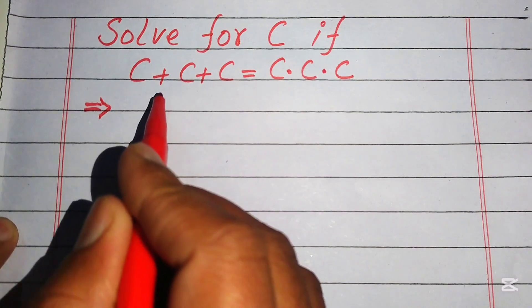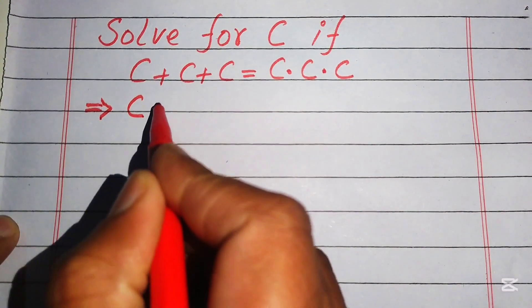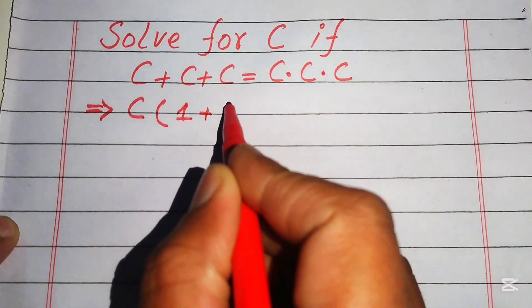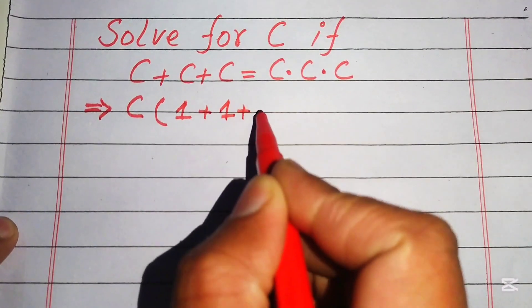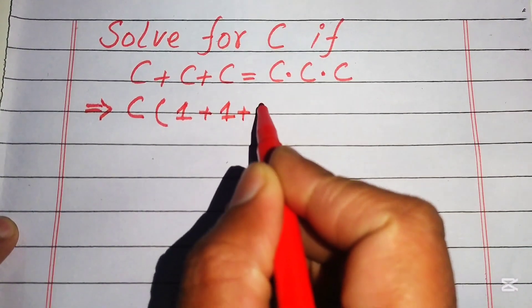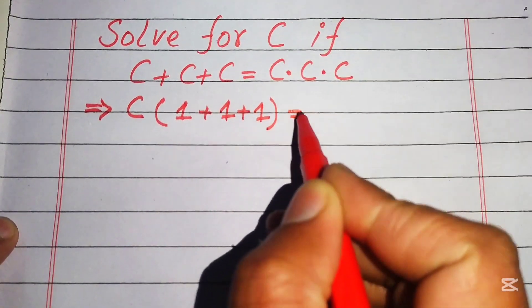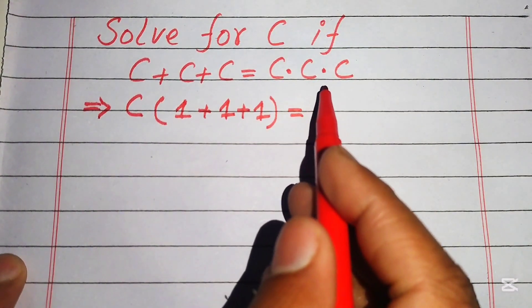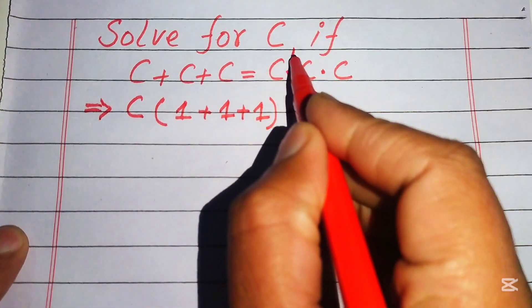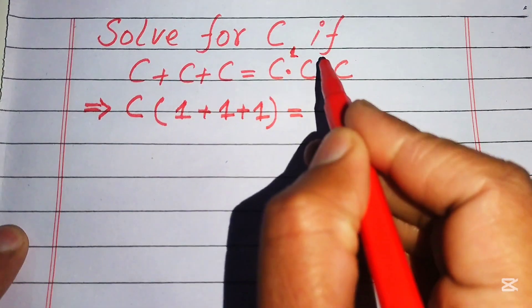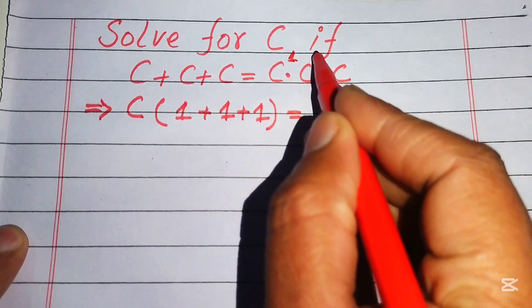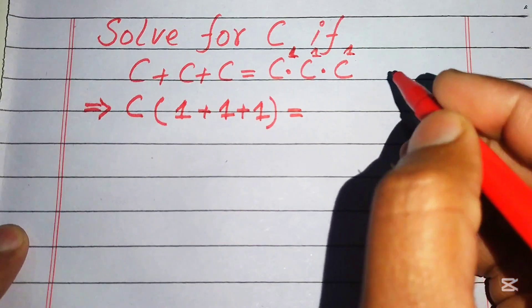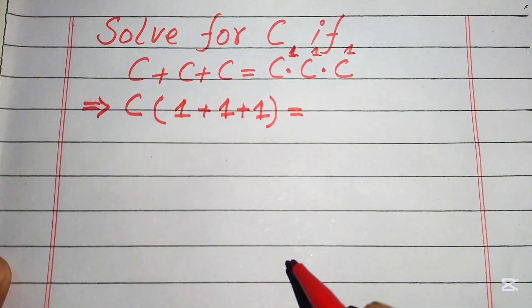We take c as common and get the remaining terms as one plus one plus one. Similarly, on the right-hand side, c is multiplied three times and the exponent of c is equal to one each time.